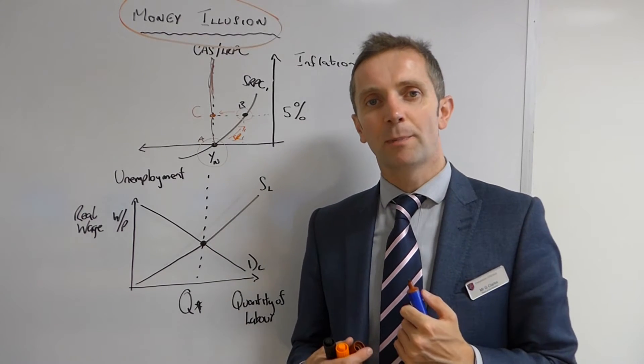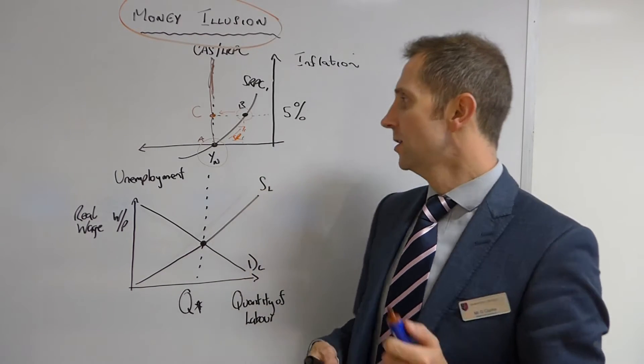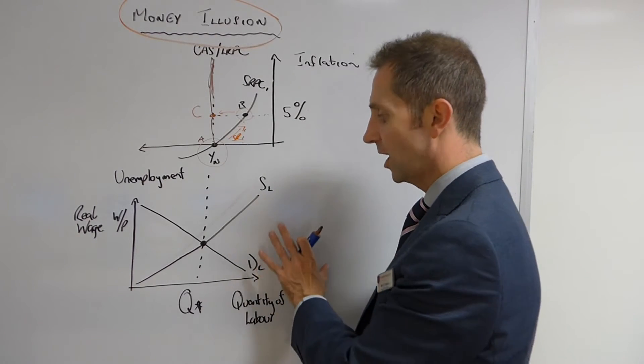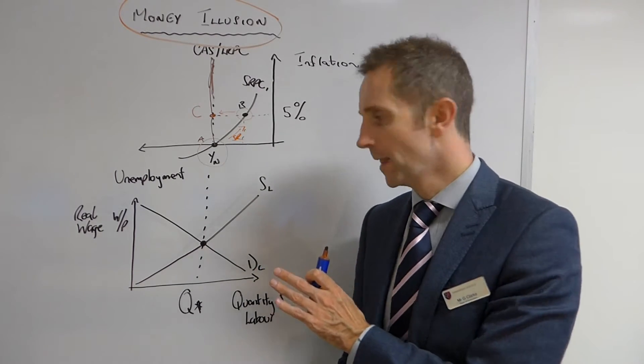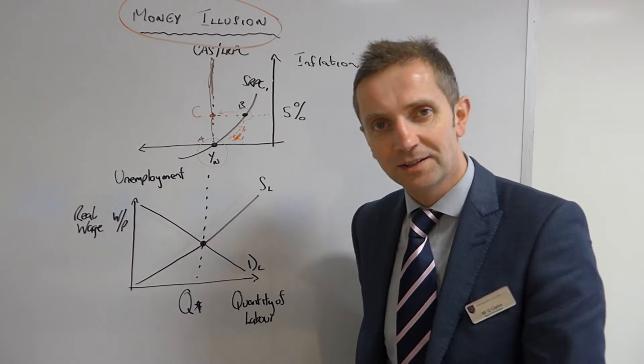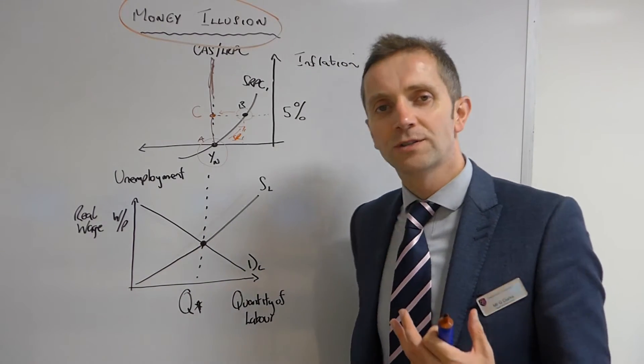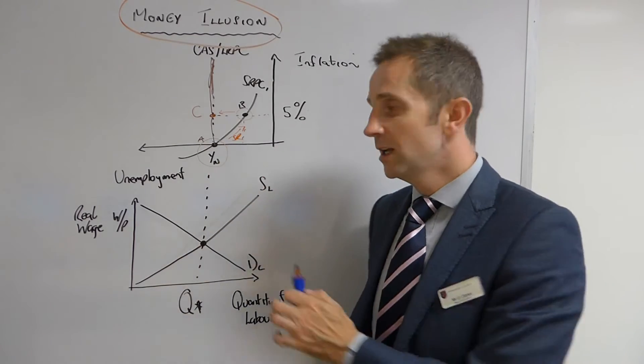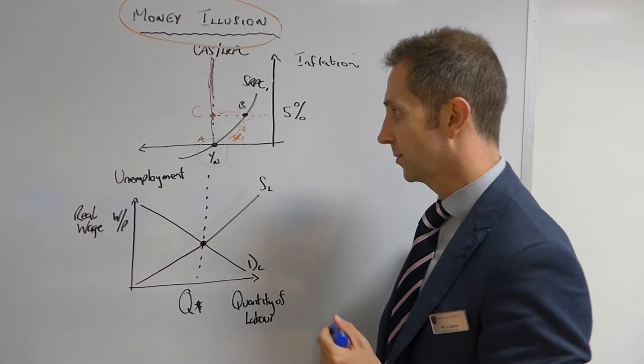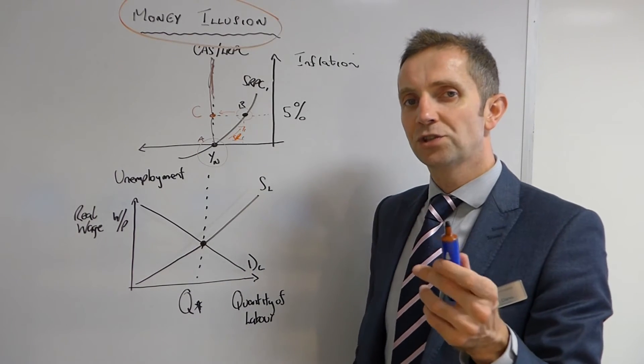Okay, so why does point B represent money illusion? Well, in order to illustrate that and to indicate that, we need to be looking at our labor market diagram because you already know how important the labor market diagram and the flex in that market, how important that is with regard to determining the shape of the long-run Phillips curve or the classical aggregate supply curve.